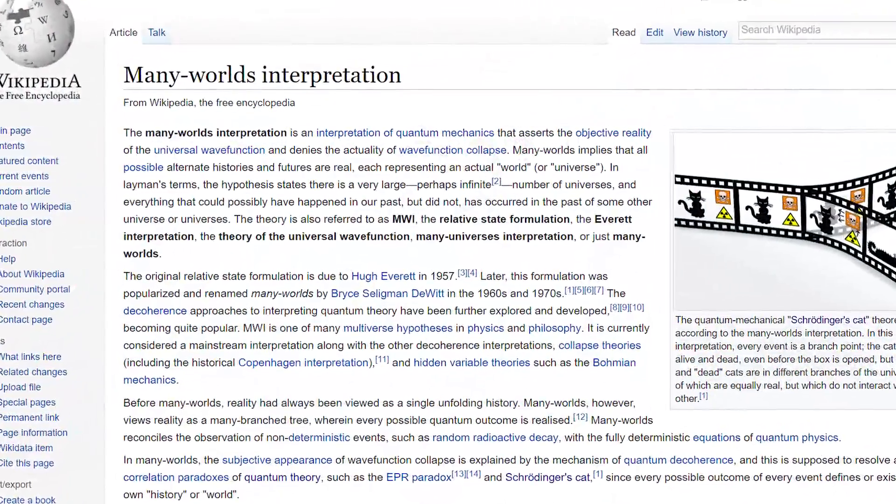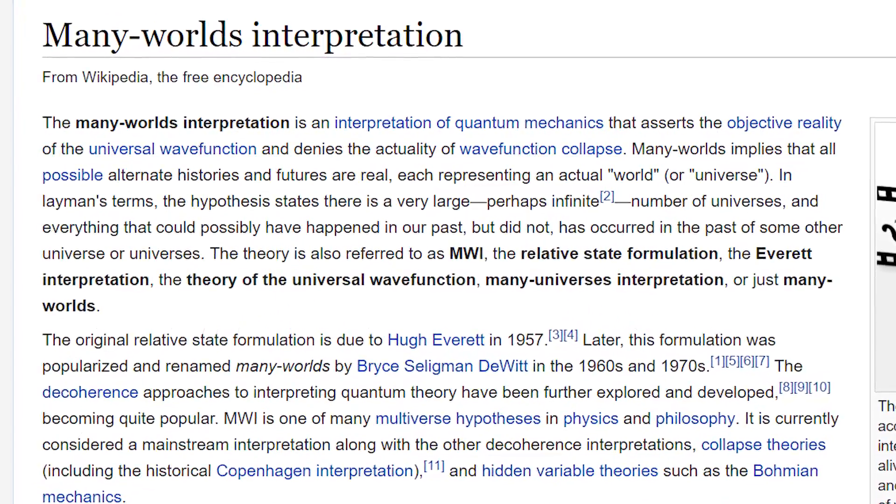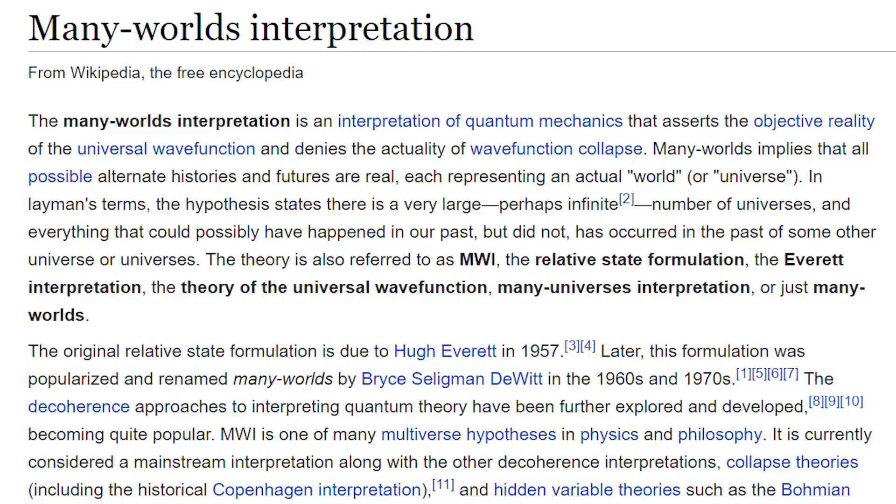He also mentioned a concept that no one in the scientific community really takes seriously, but is used often in sci-fi stories, known as the many worlds interpretation of quantum mechanics, which implies that all possible alternate histories and futures are real, with each representing an actual world or universe. It also states that there is an infinite number of universes and everything that could possibly have happened in our past, but did not, has occurred in the past of some other universe or universes. So according to this theory, there is one universe where Kojima is still working at Konami, and where maybe Konami isn't a giant pile of shit, and where the hashtag fuck Konami doesn't exist.